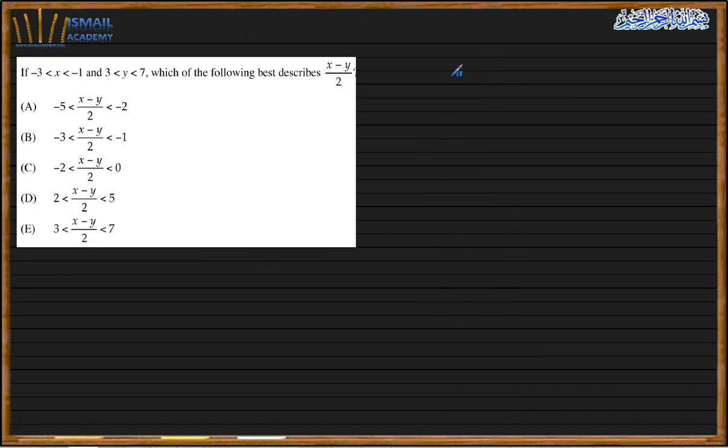So we have the class has to evaluate x minus y over 2. So x minus y over 2, here I multiply by minus 3, minus y minus 7, and I flip the sign.